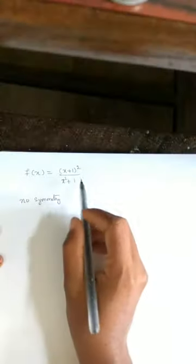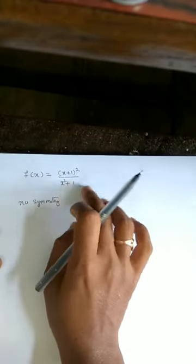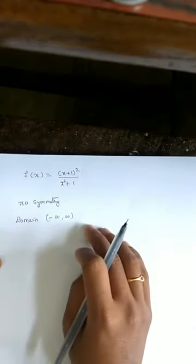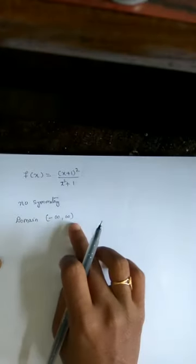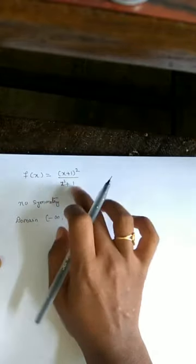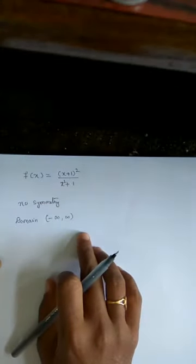Step 2 — domain: for f(x) = (x+1)²/(x²+1), the denominator x²+1 is never zero for any real x (since x²+1 ≥ 1 > 0). Therefore, the domain of the given function is (−∞, +∞).